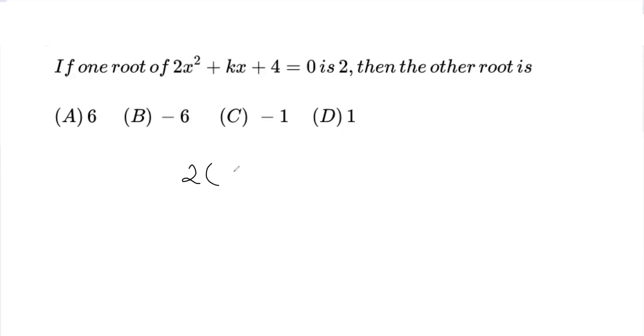Let's plug in x as 2. So, 2(2)² + k(2) + 4 = 0. 2 squared is 4, 4 into 2 is 8, plus 2k plus 4 equal to 0.